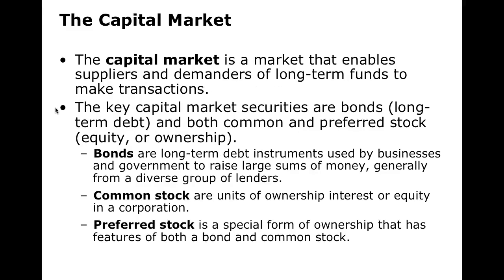Capital markets deal with long-term funds: stocks, bonds, and preferred stocks. These securities are anything greater than a year. We have equity or ownership in a company. When we talk about bonds, these are basically money that businesses borrow from individuals that pay a coupon or interest rate.